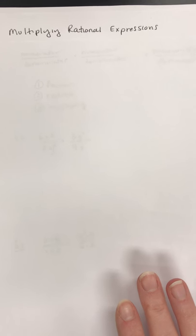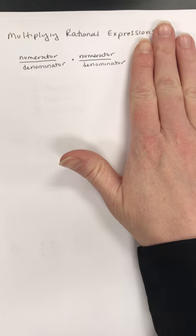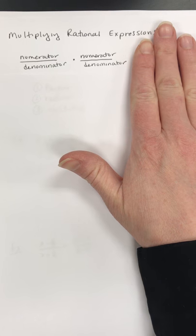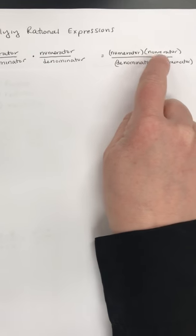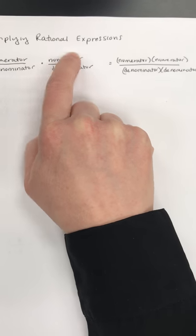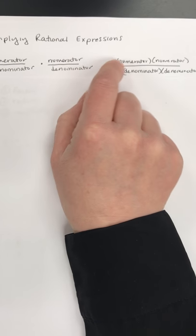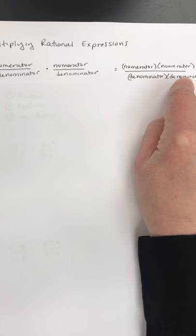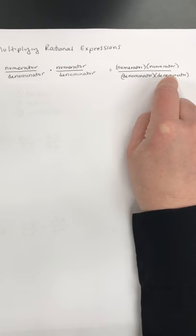You can always try to simplify first, but here's an example. If I had numerator over the denominator times numerator over the denominator, what you can do is numerator times numerator and denominator times denominator. Don't cross over to multiply. It's just top times top, bottom times bottom. But it is going to give you a bigger result if you multiply first, so you always want to try to simplify before you multiply.